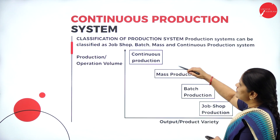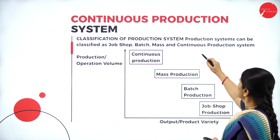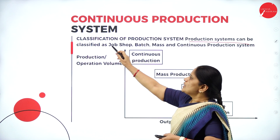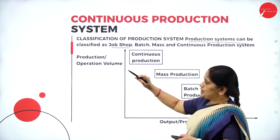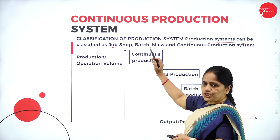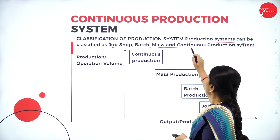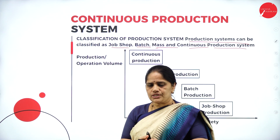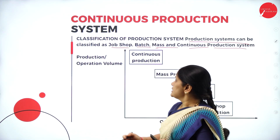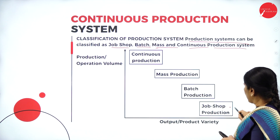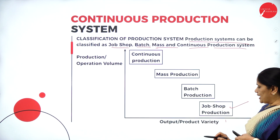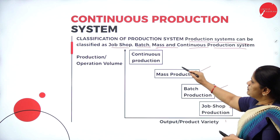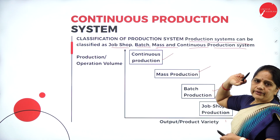In this classification of production system, production systems can be classified as job shop production, batch production, mass and continuous production systems. So there are four systems in the production system: job shop production, batch production, mass production, and continuous production.